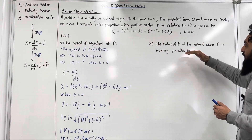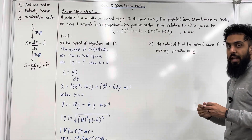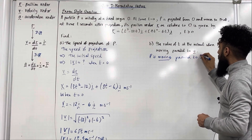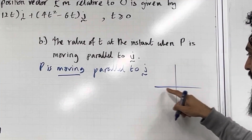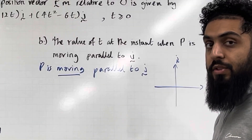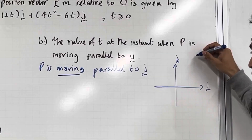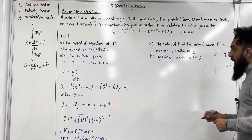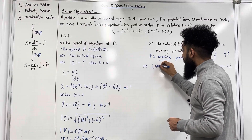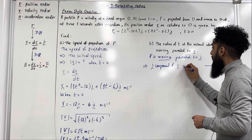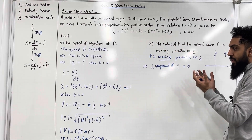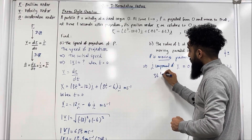Moving on to part b: the value of t at the instant when P is moving parallel to j. If I draw a coordinate grid, the horizontal axis represents the i-axis and the vertical axis represents the j-axis. For the particle to move parallel to j, the velocity vector must be parallel to the vector j — meaning the i component of the velocity vector has to equal zero. So we take the i component of the velocity vector, which is 3t squared minus 12, and set that equal to zero.